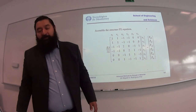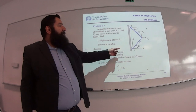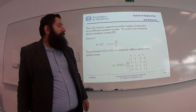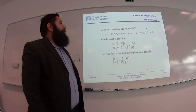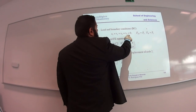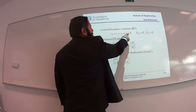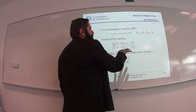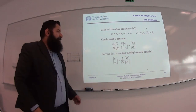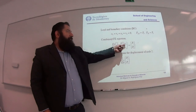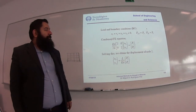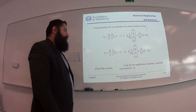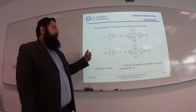Applying boundary conditions and reducing the system, we get two unknowns: U2 and V2. Substituting the values, we get a 2×2 system of equations for U2 and V2. Knowing these displacements, we can find the stresses using the formulas presented before, in bar one and bar two. We need to check that the results are in equilibrium.